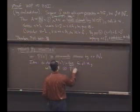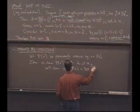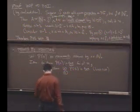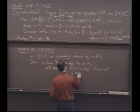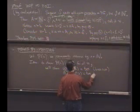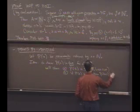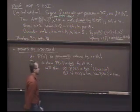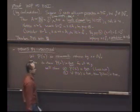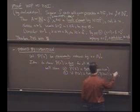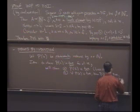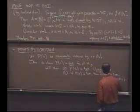The first thing is that P of 1 is true. This is often called the base case. And we want to show that if the kth statement is true, if P of k is true, then P of k plus 1 is true. And this also has a name. It's called the inductive step. This is the inductive step. Base case, inductive step. The inductive step is this entire piece right here.